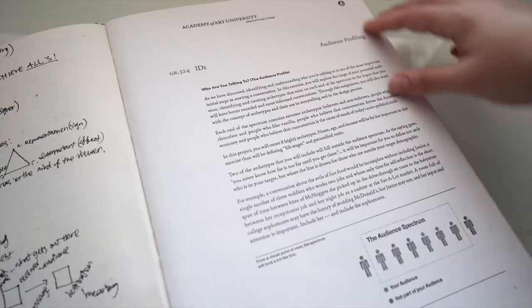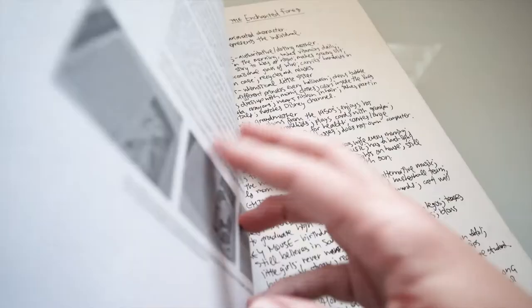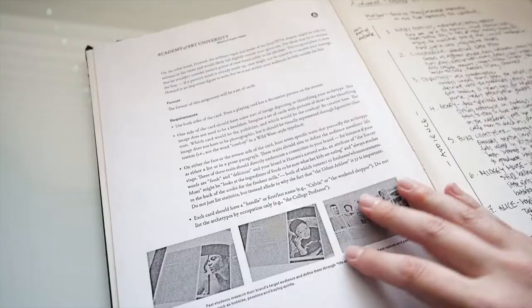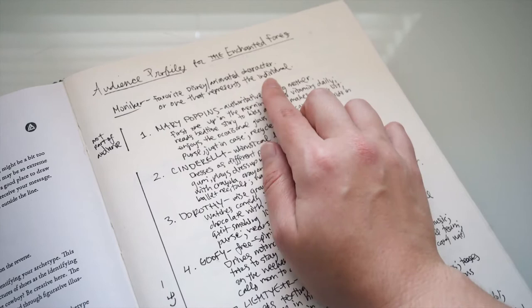So here at about the third week, this is one of the assignments, which is to create an audience profile. You'll see later on in the final visual standards book how this turns out, but this was a guide on how to go about thinking of those. And here is how I started to put together my audience profiles for the first part of the project, which was to create an identity for a place. And I chose the Enchanted Forest.